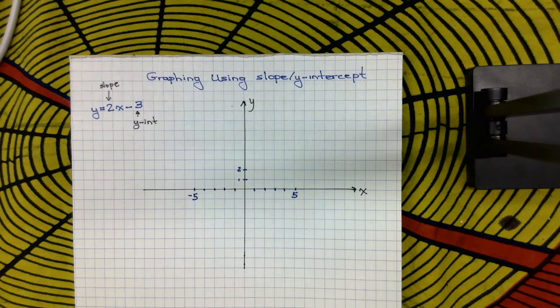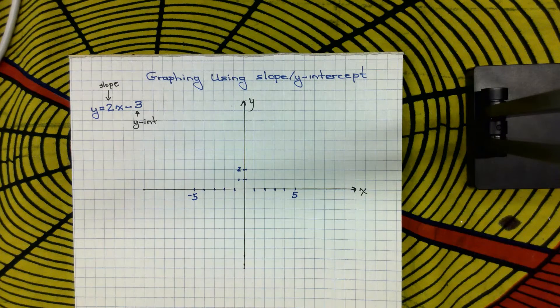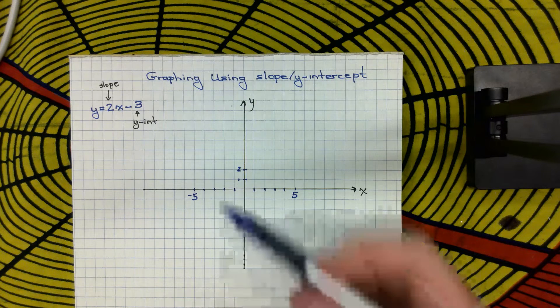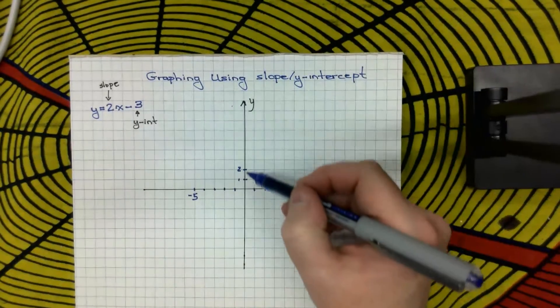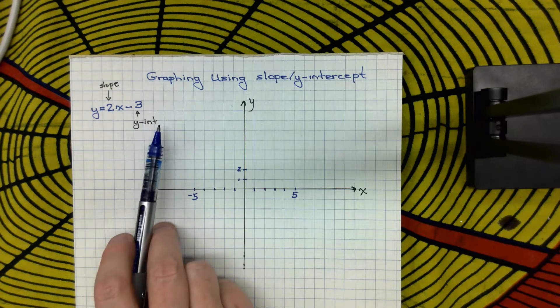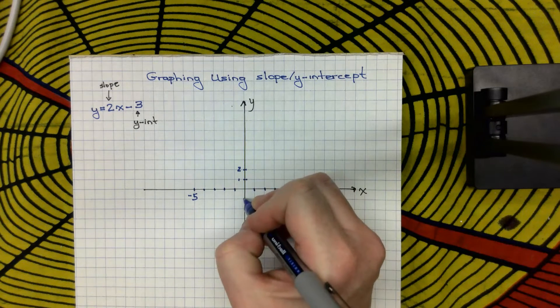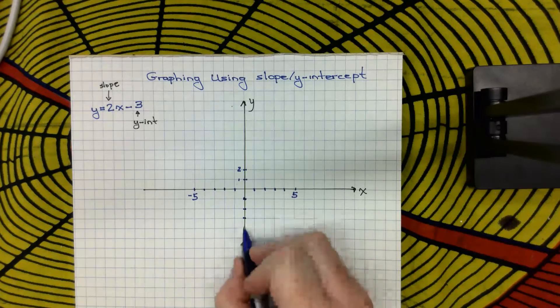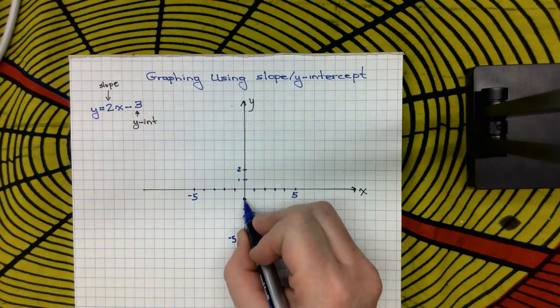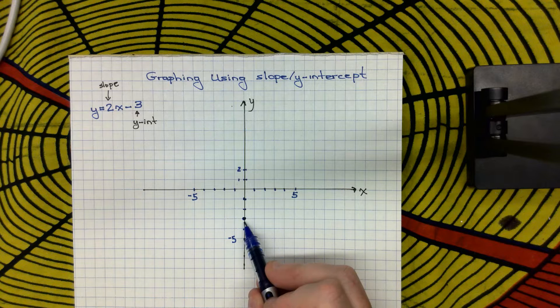So I know my y-intercept is negative 3, and I know that my y-intercept is on my y-axis. So this is my y-axis, and somewhere along here I need to put minus 3. So negative 1, negative 2, negative 3, I am going to put a dot to represent my y-intercept.